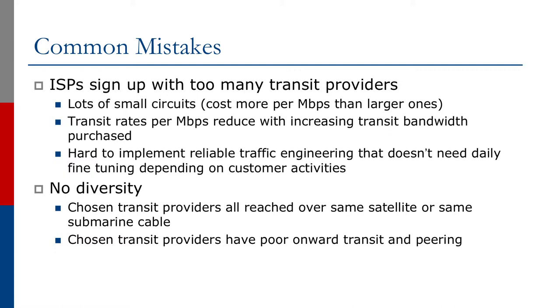Even with signing up with two or three transit providers, another common mistake is that there's no diversity because the chosen transit providers are all reached over the same submarine cable or over the same satellite connection. Or even if the chosen transit providers have good connectivity to the local network, maybe their onward connectivity is either poor or they have very poor peering arrangements. So when a network operator is trying to choose how to multi-home, who they purchase transit from is vitally important — it is not the cheapest answer to an RFP.